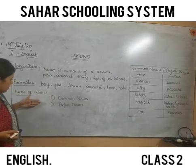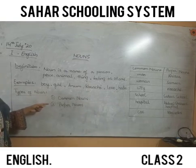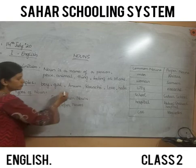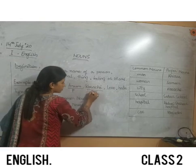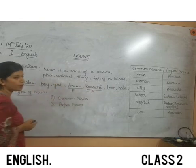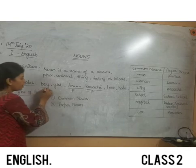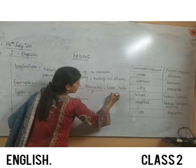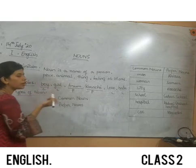When we move ahead to study types of nouns, there are two types of noun: common and proper. Anam and Karachi are proper nouns, while boy, girl, love, and hate are common nouns.